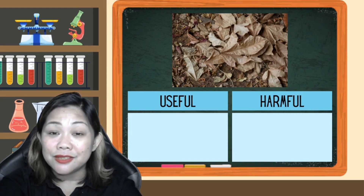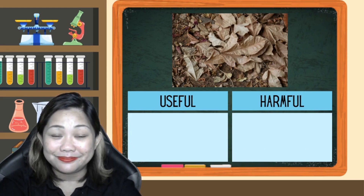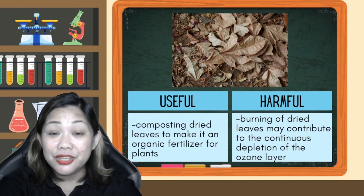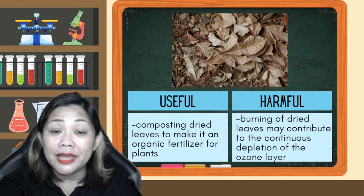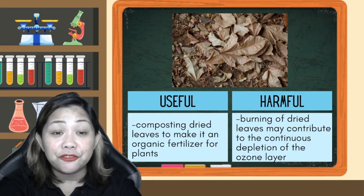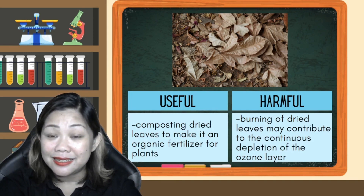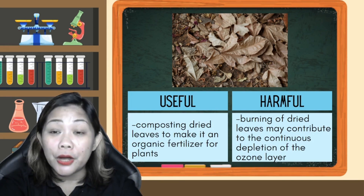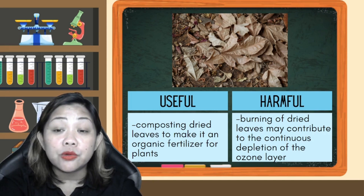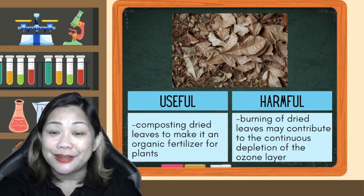For dried leaves: composting dried leaves to make organic fertilizer for plants is useful, while burning dried leaves may contribute to the continuous depletion of the ozone layer, which is harmful.